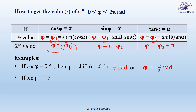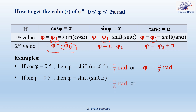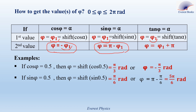If sine phi equals 0.5, then the first value of phi is given by pressing shift sine 0.5 on the calculator, which gives pi over 6 radians. The second value of phi is equal to pi minus the first value, which is pi minus pi over 6, and it is equal to 5 pi over 6 radians.